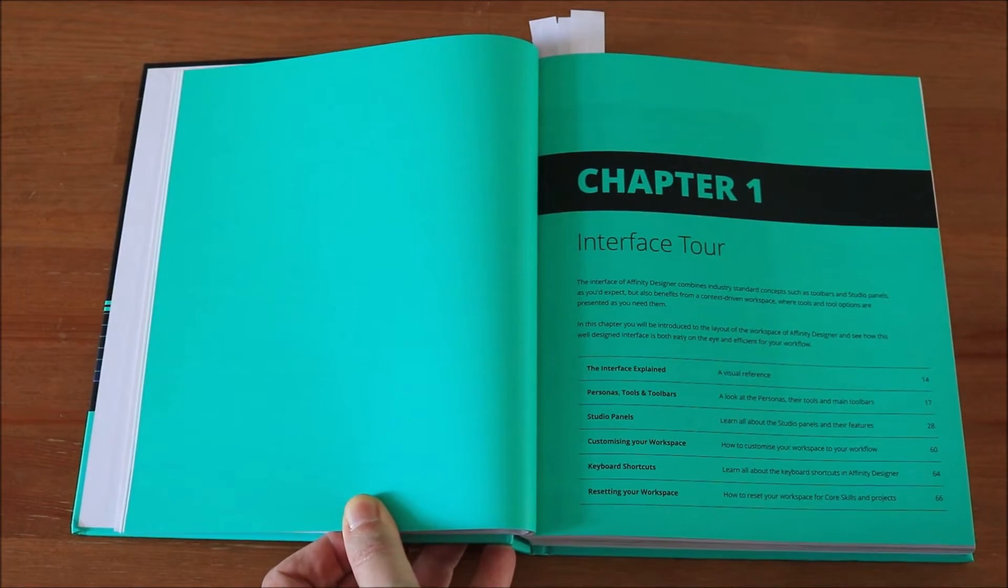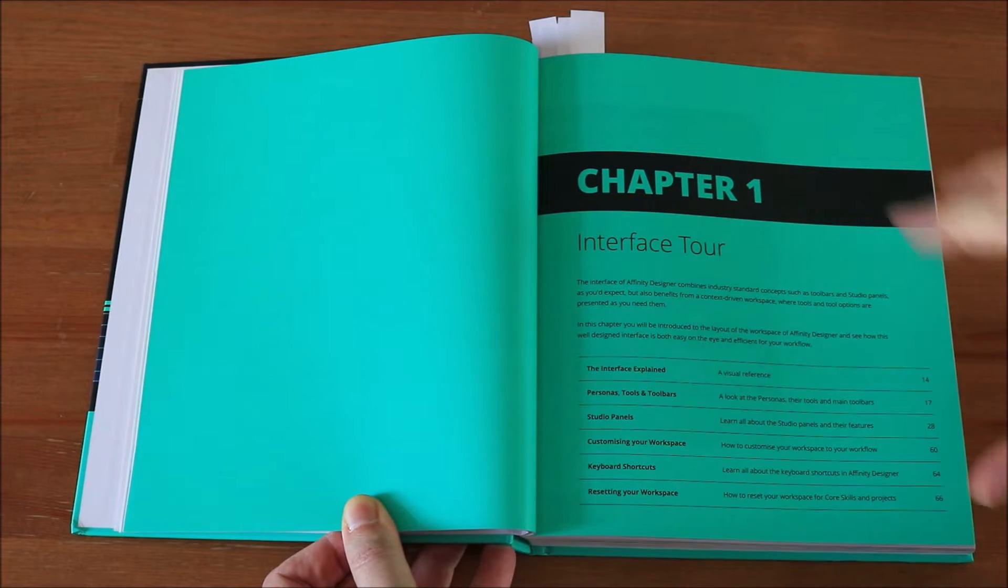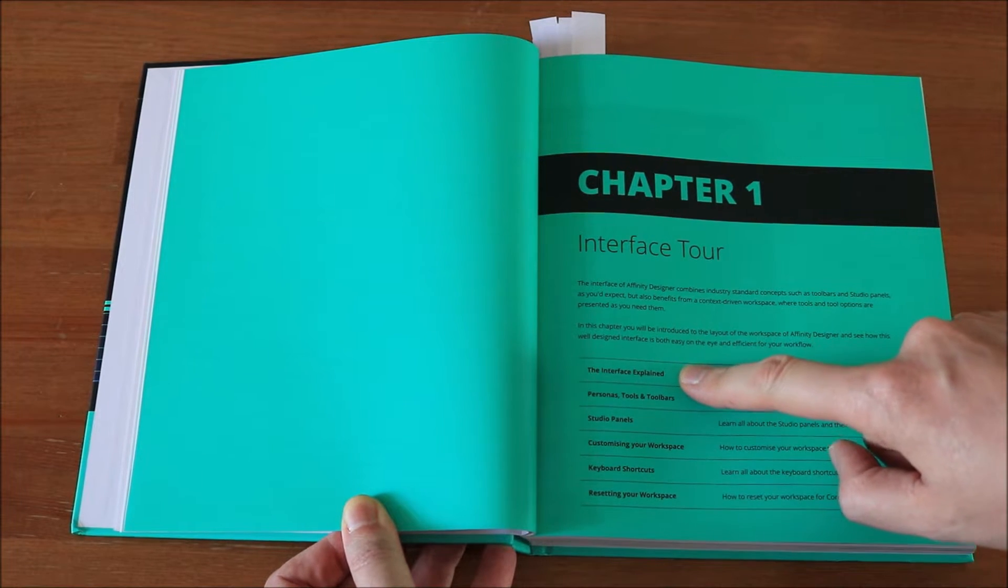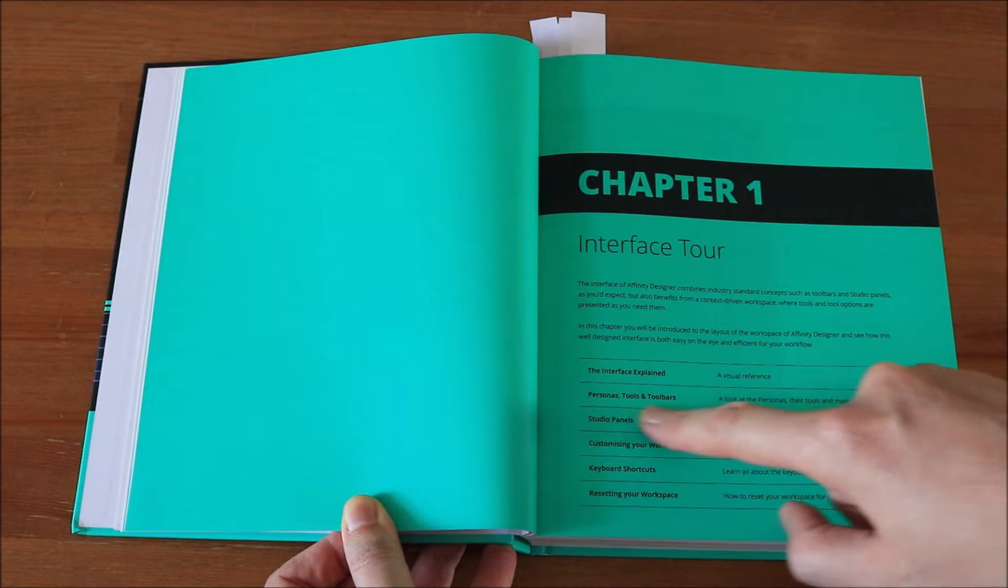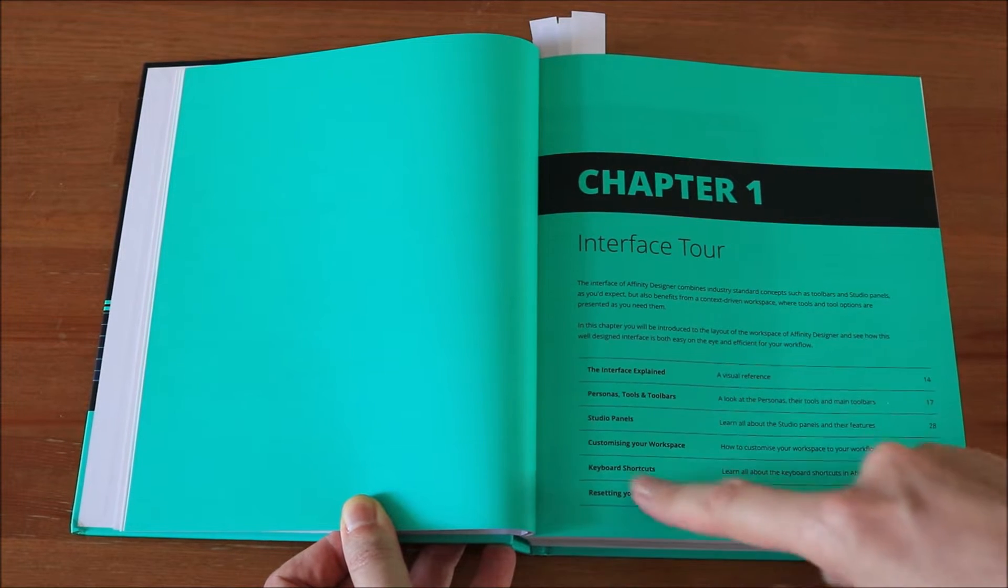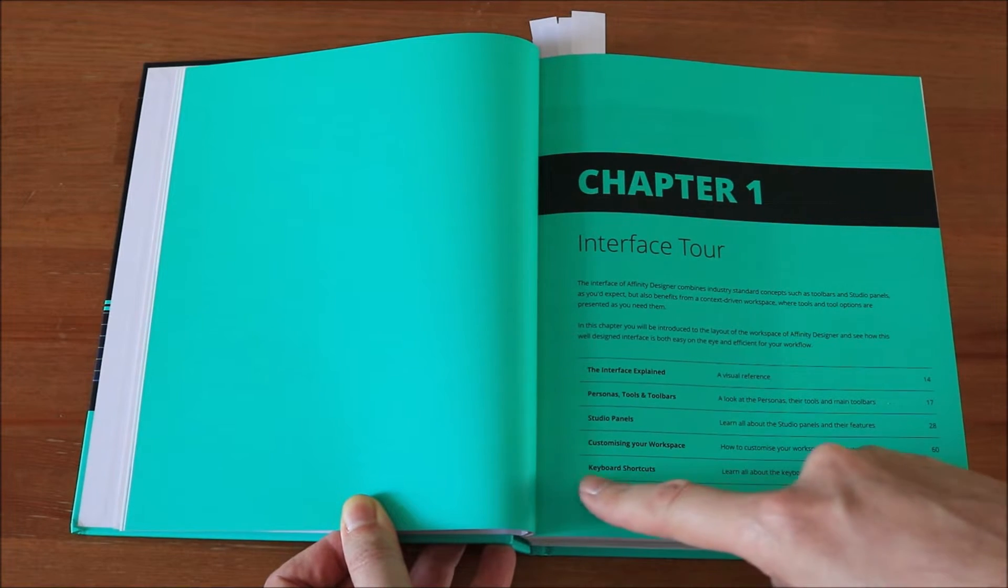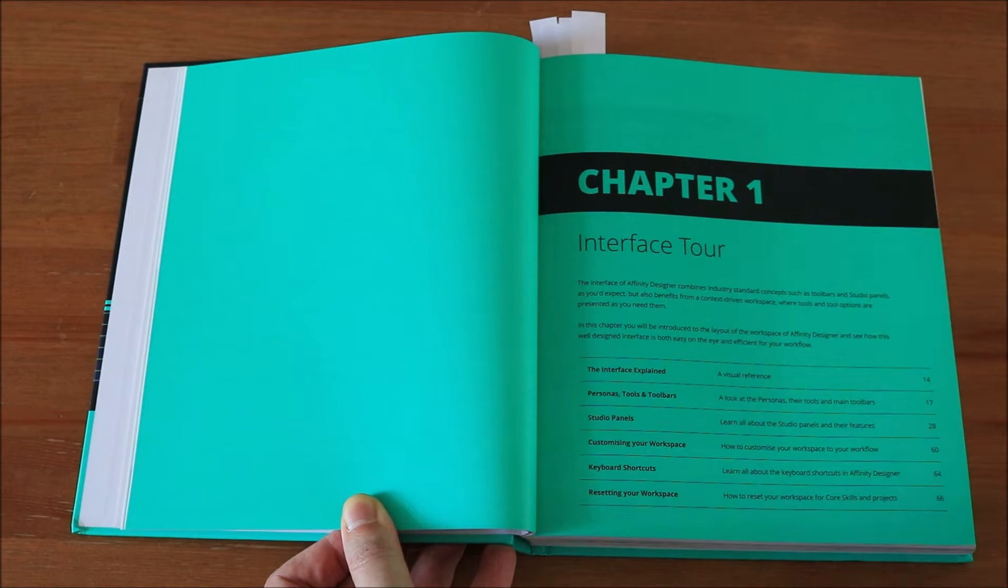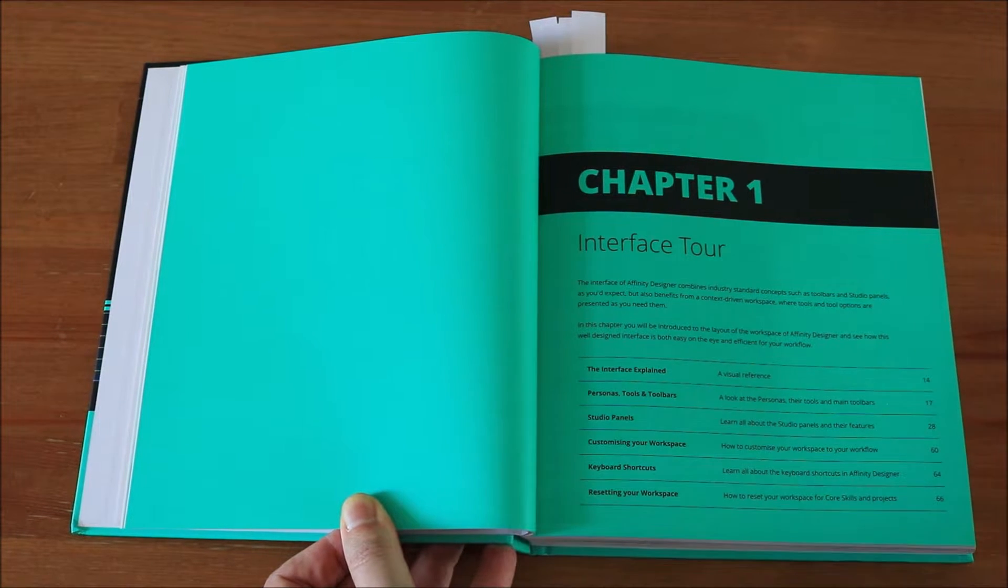So as you can see here, similar to the Affinity Photo book, this is built up in chapters where first you get an interface tour. So it shows you the interface, explains the personas and tools, studio panels, customizing your workspace, keyboard shortcuts, and resetting your workspace. This explains the very basics on how to understand the interface.